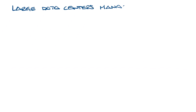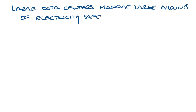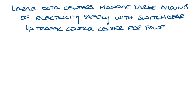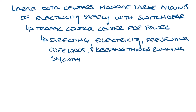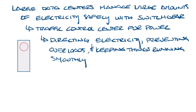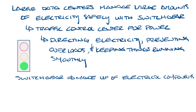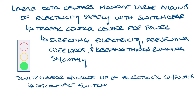Large data centers manage massive amounts of electricity, and they do it safely with switchgear. Switchgear is like the traffic control center for power — directing electricity, preventing overloads, and keeping things running smoothly. Switchgear is made up of electrical disconnect switches, circuit breakers, and fuses that control and protect power systems.